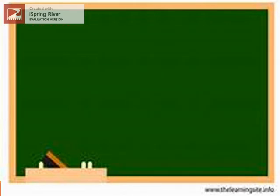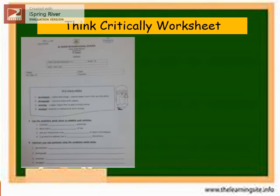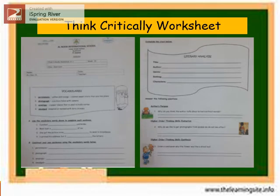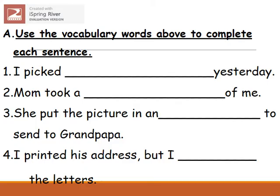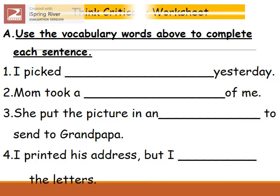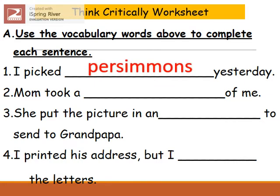Now let us try to answer the Think Critically worksheet. After learning the story words, let's try to use these vocabulary words to complete each sentence. Number one: I picked blank yesterday. The answer is persimmons. I picked persimmons yesterday.